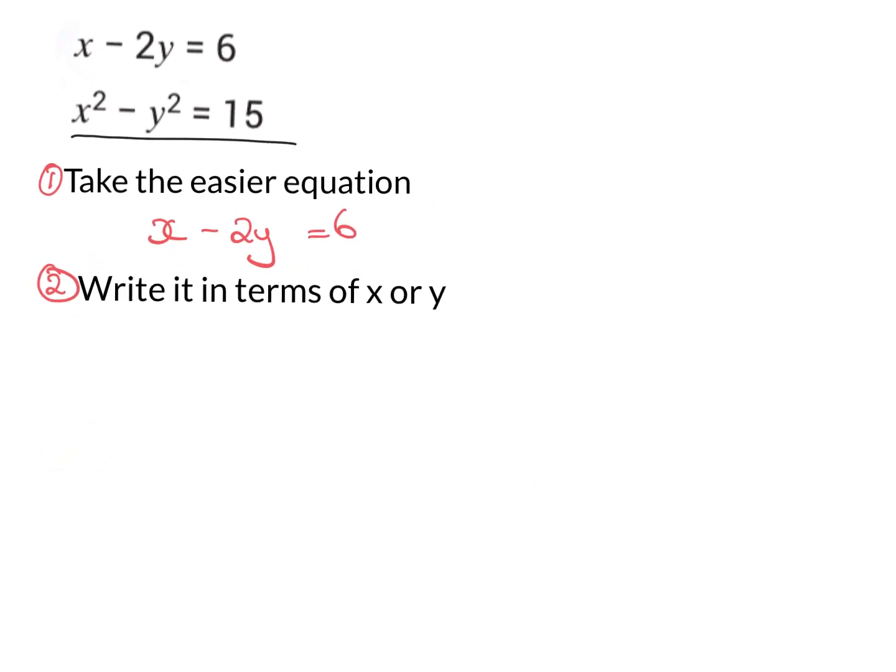So what does write in terms of x or y mean? It means I want x on one side, everything else on the other, or I want y on one side, everything else on the other. So generally when you see these, one will be a little bit easier and it's probably easier to have x on one side. So if I have x on one side that means I need to get rid of the 2y so I get rid of a minus 2y with a plus 2y.